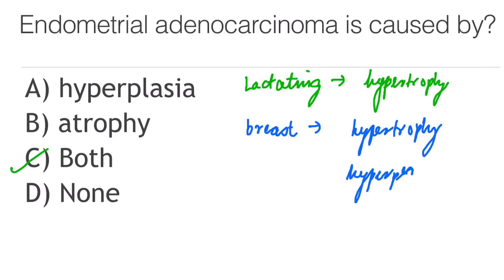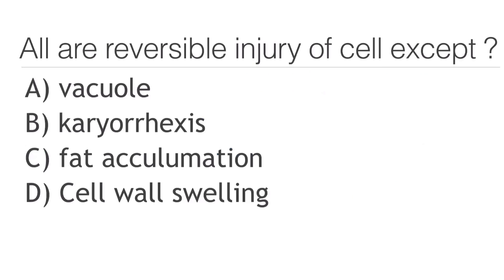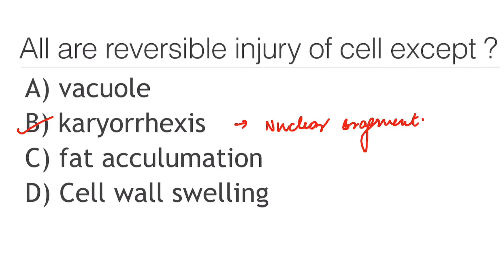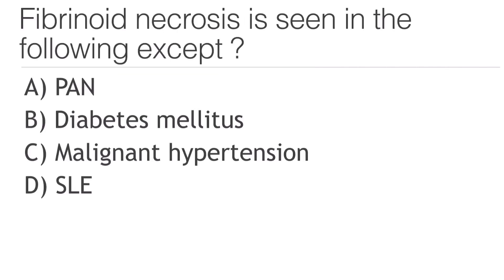All are reversible injury of the cell except: vacuolation, karyorrhexis, fat accumulation, or cell swelling? The answer is karyorrhexis. Karyorrhexis is nuclear fragmentation that is seen in irreversible cell injury.